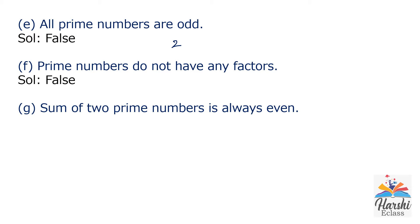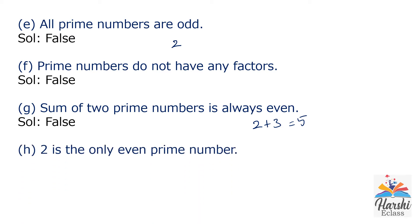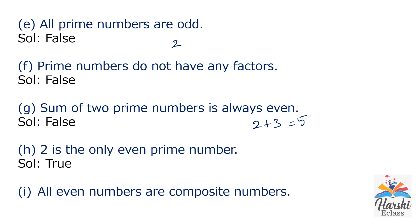Statement G: The sum of two prime numbers is always even. It is false. Because 2 is also a prime number and 3 is also a prime number, and 2 plus 3 equals 5, which is an odd number. Statement H: 2 is the only even prime number. It is true — 2 is the only even prime number. Statement I: All even numbers are composite numbers. It is false because 2 is an even number but still it is a prime number. So it is false.